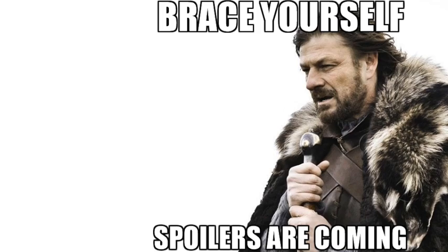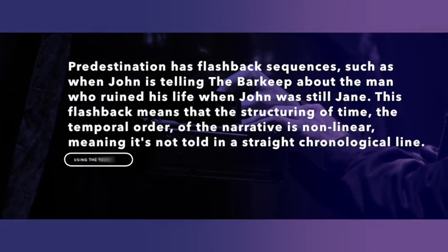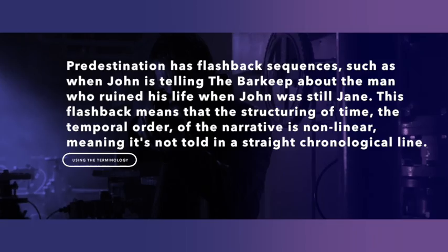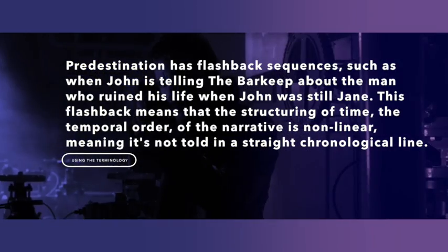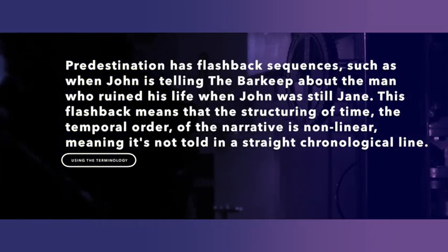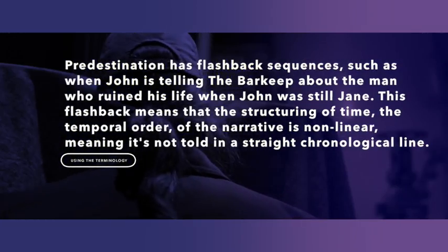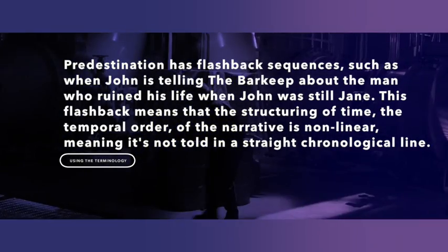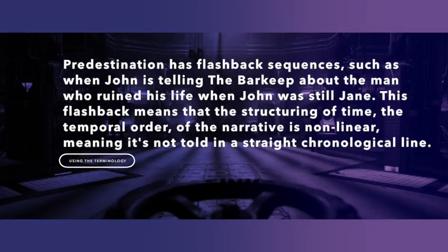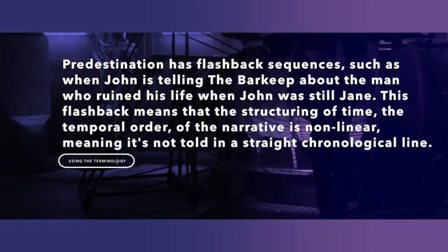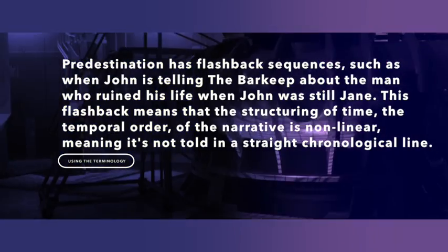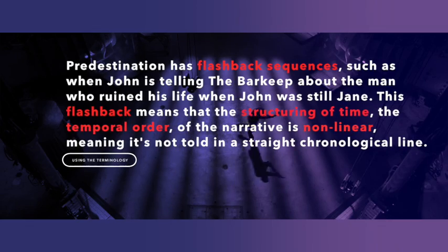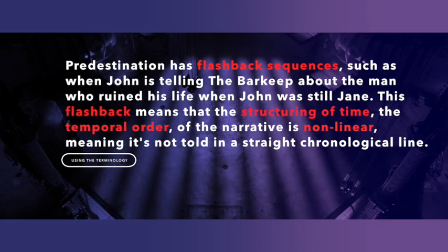For example, Predestination has flashback sequences, such as when John is telling the barkeep about the man who ruined his life when John was still Jane. This flashback means that the structuring of time — the temporal order — of the narrative is non-linear, meaning it's not told in a straight chronological line. So just like that, in one very small explanation and example, you're able to include four relevant pieces of media terminology.